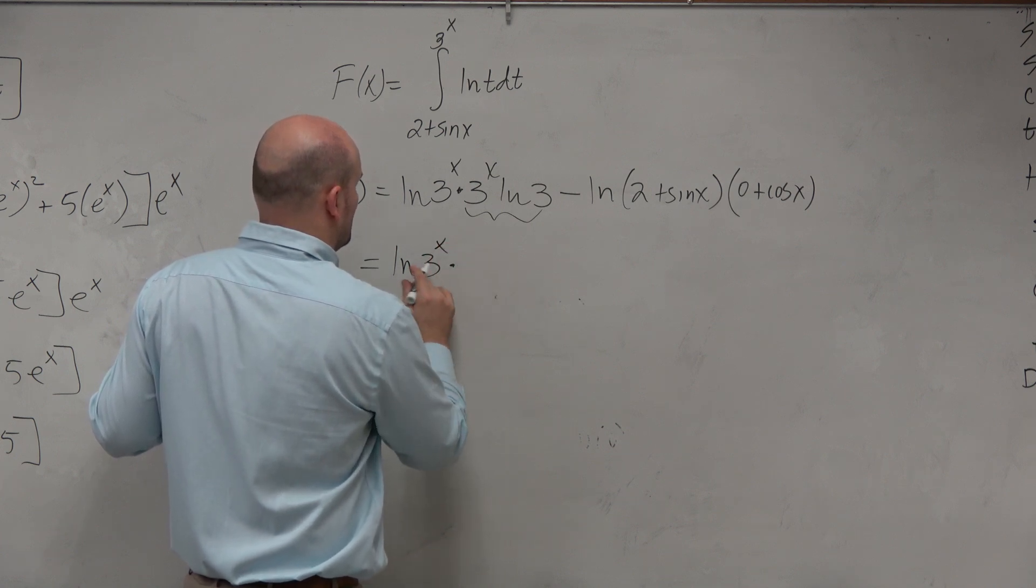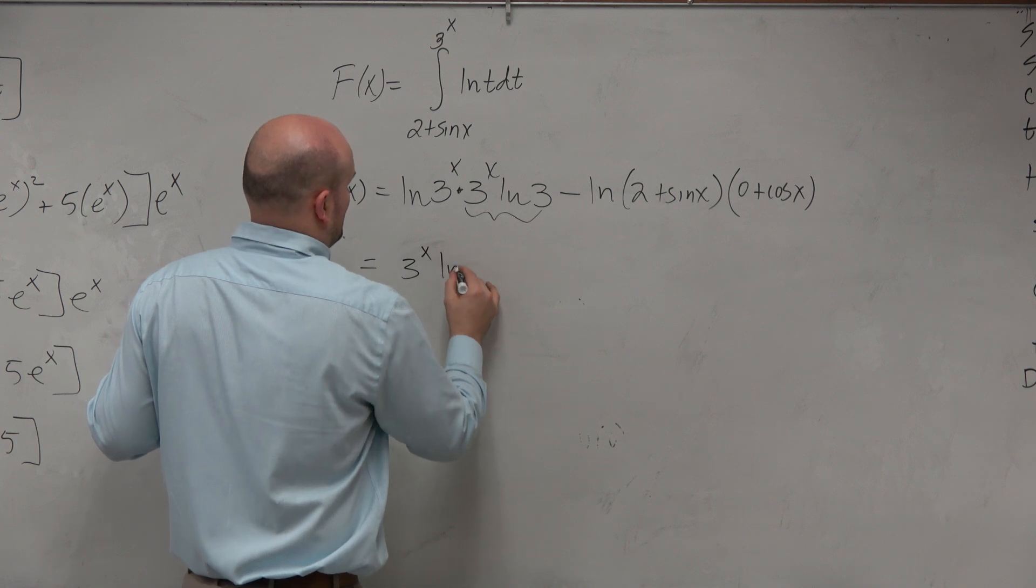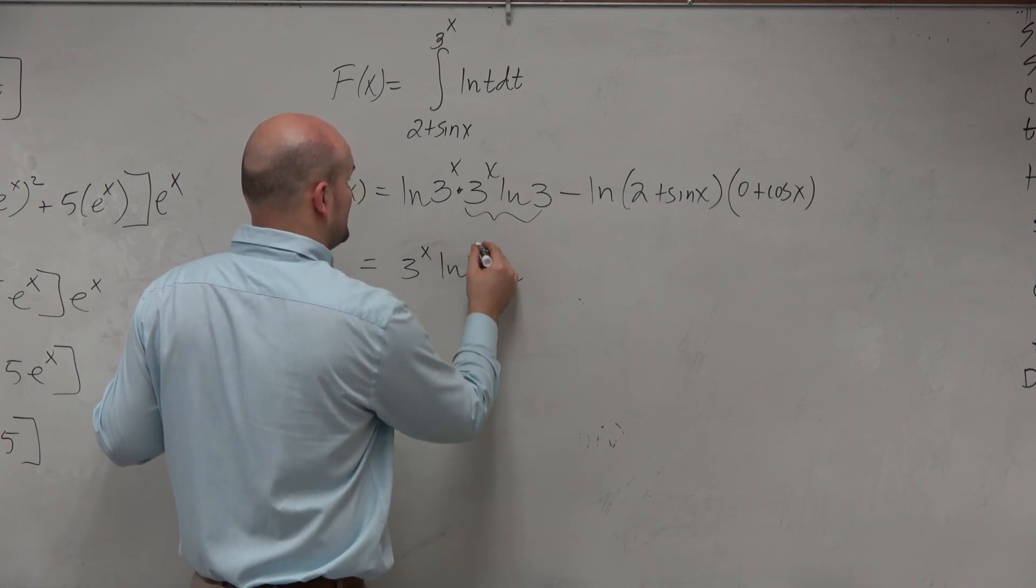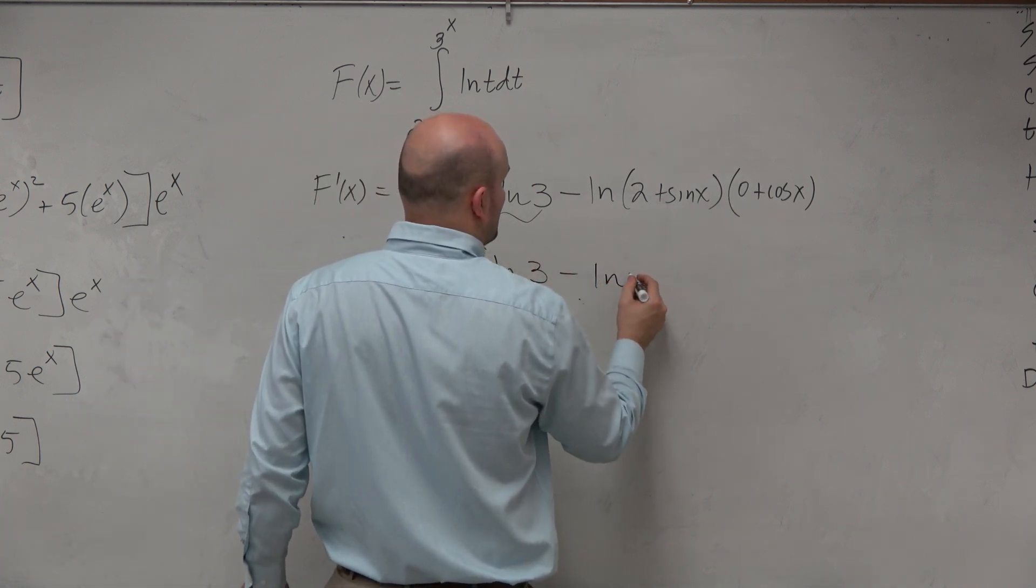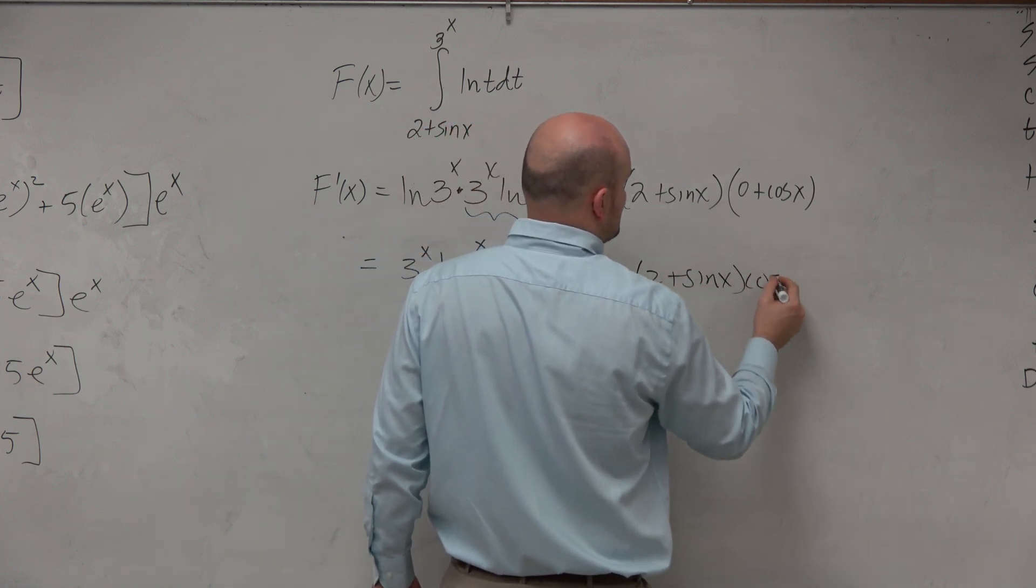ln of 3 to the x, I'll actually probably write maybe like the 3 to the x in front. ln of 3, ln of, I'm sorry, ln of 3x times ln of 3. I guess I could simplify that by adding them. ln of 2 plus sine of x times cosine of x.